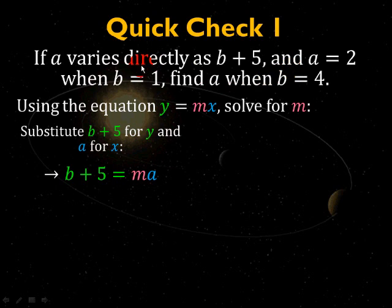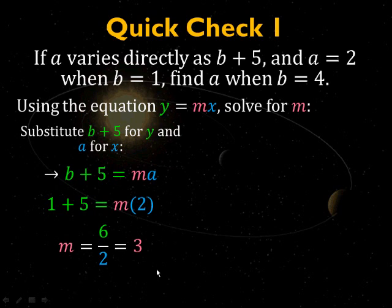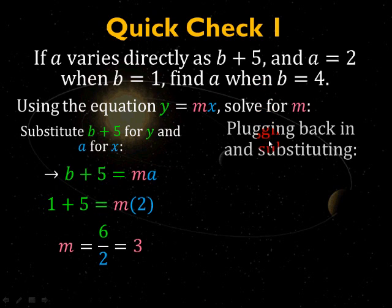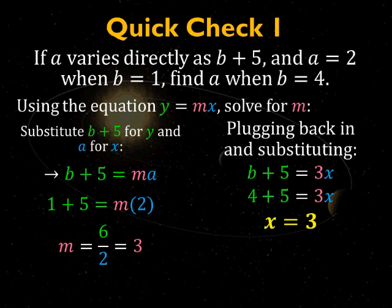b plus 5 equals ma. Now, you put in your values of a and b. a is 2, b is 1, solve for m, you get m equals 3. Again, all you do now is plug it back in. Now, you want to solve for a when b is 4. When b is 4, you plug in 4 for b, you now know what m is, it's 3, and you solve for x. 3x equals 4 plus 5, so x equals 3. Don't let the expression trip you up. Just pretend that whole thing is just like y, and substitute the entire thing when you plug in the number.